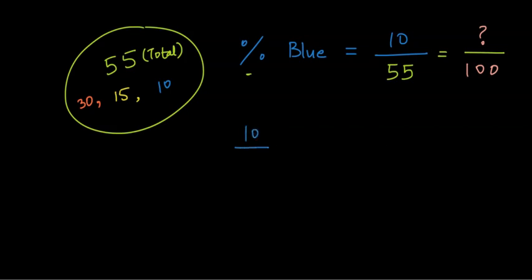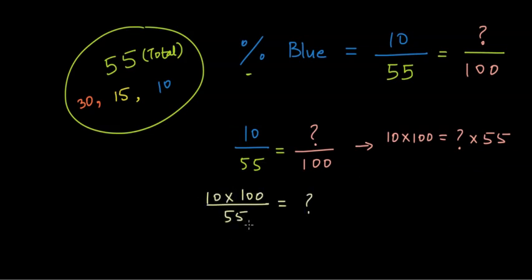So what we need to solve is 10 divided by 55 is equal to question mark divided by 100. How do we solve this? We can cross multiply. So from here we can cross multiply and we can write 10 times 100 is equal to question mark times 55. To find the question mark, we can divide both sides by 55. So we have 10 times 100 divided by 55 gives us the percentage and required answer.